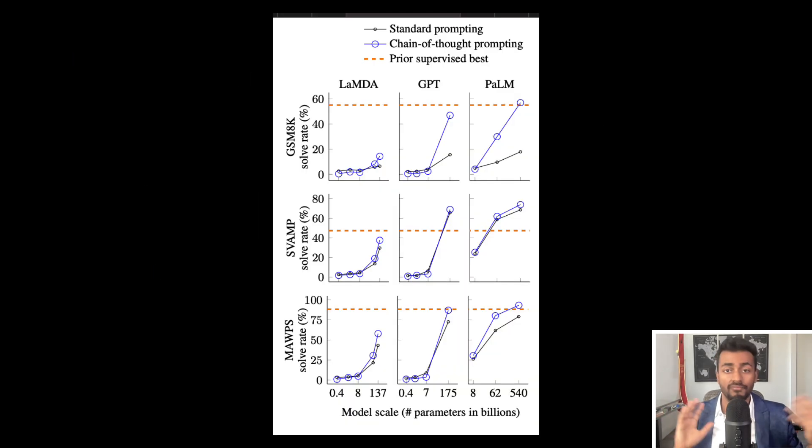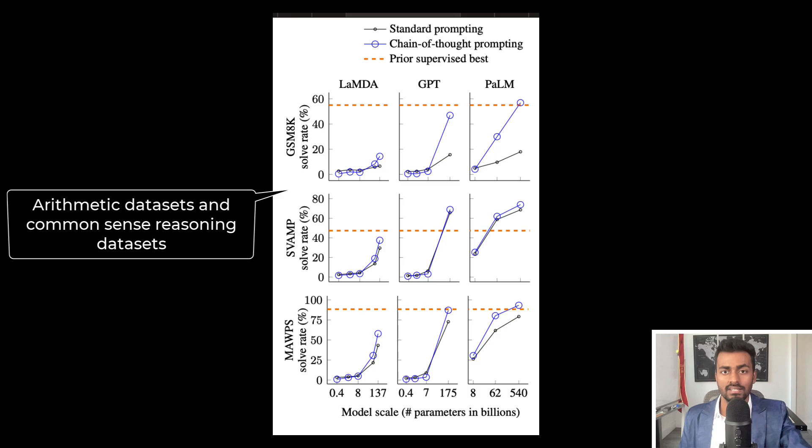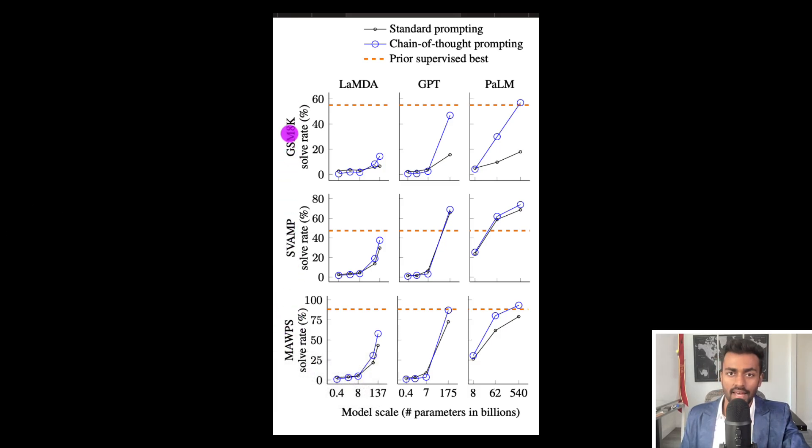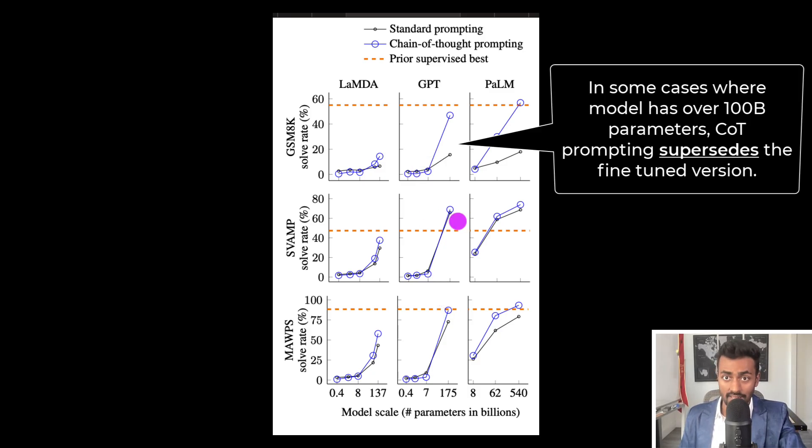Now, let's take a look at the performance of these across arithmetic data sets, as well as some common sense reasoning data sets. And looking at that, we can see that for the larger models, which are over like 100 billion parameters, we can see this blue line, which is the performance of chain of thought prompting, in some cases can even supersede if not come pretty close to the fine tuned version.